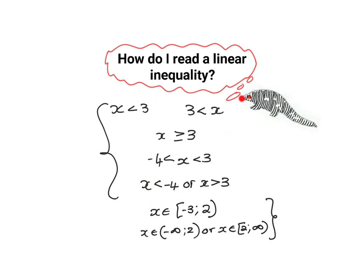These inequalities here in this group are written in a certain notational style called set builder notation. These two here are written in interval notation. You read them as follows: x is an element of the range from minus three, including minus three, up to two, but excluding two. So x is an element of the range from negative three, including negative three, up to two, not including two.